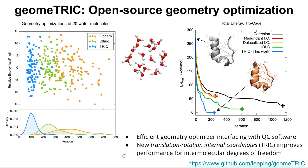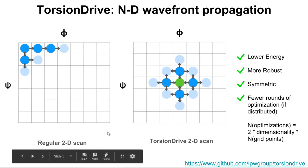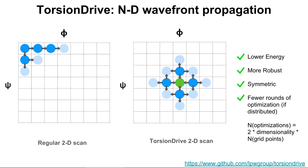We're relying on geomeTRIC as a low-level tool, with the quantum chemistry code such as Psi4 being the even lower-level tool that geomeTRIC calls to obtain energies and gradients at a given level of theory. Sitting one level higher is a tool called TorsionDrive. TorsionDrive generates this grid of constrained energy minimizations through the idea of wavefront propagation.